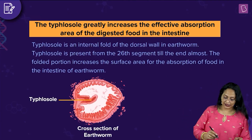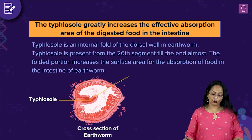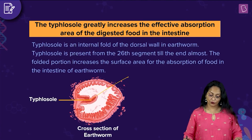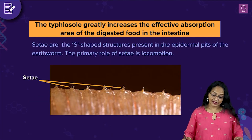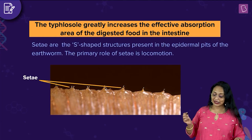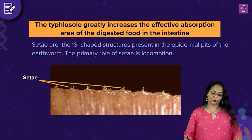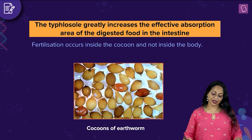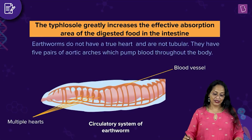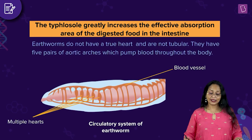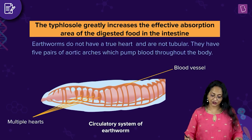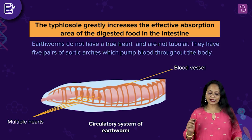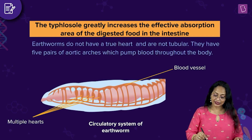You can see the Typhlosole — this is the Typhlosole. Typhlosole is an internal fold of the dorsal wall in the earthworm, present from the 26th segment till the end. The folded portion increases the surface area for the absorption of food in the intestine. Setae are S-shaped structures present in the epidermal pits of the earthworm; the primary role of setae is locomotion. Fertilization occurs inside the cocoon and not inside the body. Earthworms do not have a true heart; they have five pairs of aortic arches which pump blood throughout the animal's body. So the right answer is B.